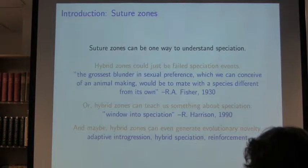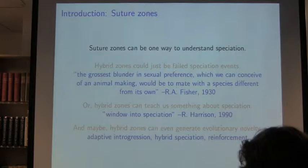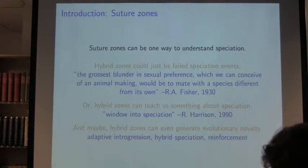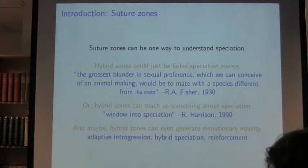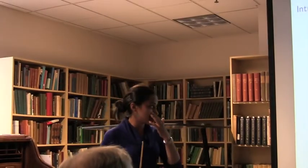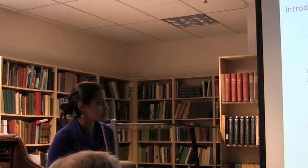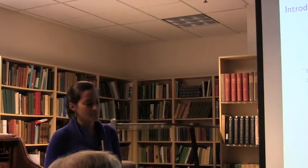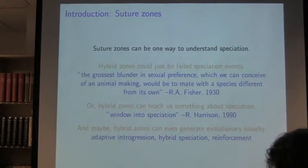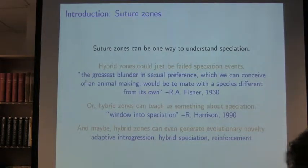Suture zones can be a powerful way to understand speciation, because they give us a chance to look at what is happening between lineages previously isolated that are coming back into secondary contact. There are differing historical opinions on hybrid zones. I love this quote from Ronald Fisher: 'The grossest blunder in sexual preference which we can conceive of an animal making would be mating a species different from its own.' Many said hybrid zones are just failed speciation events. But hybrid zones can teach us something about speciation, and as Rich Harrison said, they are a possible window into speciation — and also potentially a source of evolutionary novelty through adaptive introgression, hybrid speciation, or reinforcement.